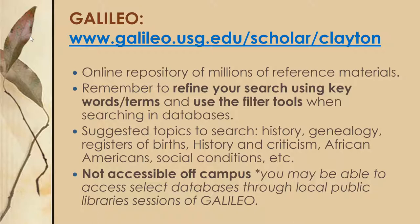You can also go directly to Galileo at galileo.usg.edu/scholar/clayton. Galileo is an online repository of millions of reference materials. Remember to refine your search using keywords and terms and use the filters tool when searching in the databases. We suggest these topics for searching: history, genealogy, registers of births, history and criticism, African Americans, and social conditions. Galileo is accessible to public and community users on campus, but it will not be accessible off campus. However, you can check with your local public library to see what subscriptions they may have to Galileo.